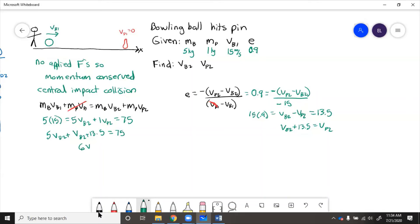So 6VB2 equals 61.5, VB2 equals 10.25 meters per second. This is positive, so we know it is to the right. Okay, so the bowling ball slowed down a little bit, which makes sense because it ran into something. So it was going 15, it hit something, now it's only going 10.25.